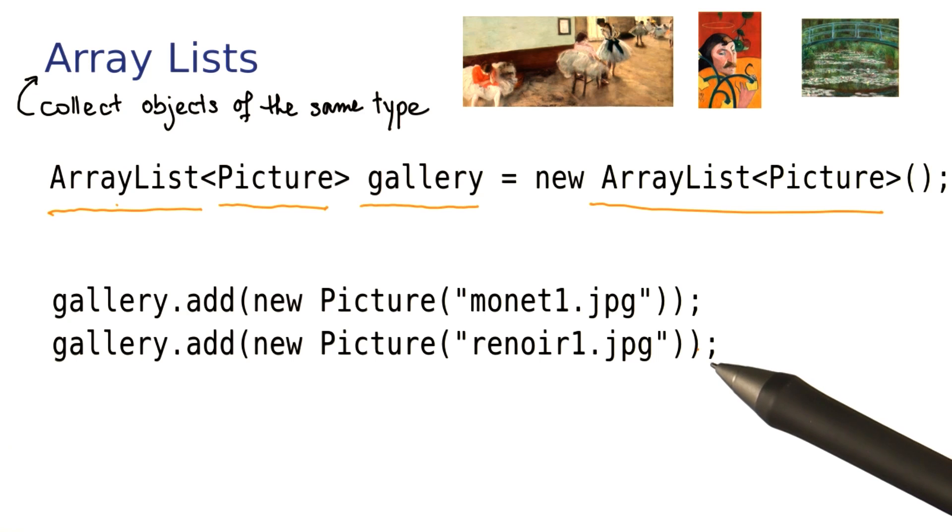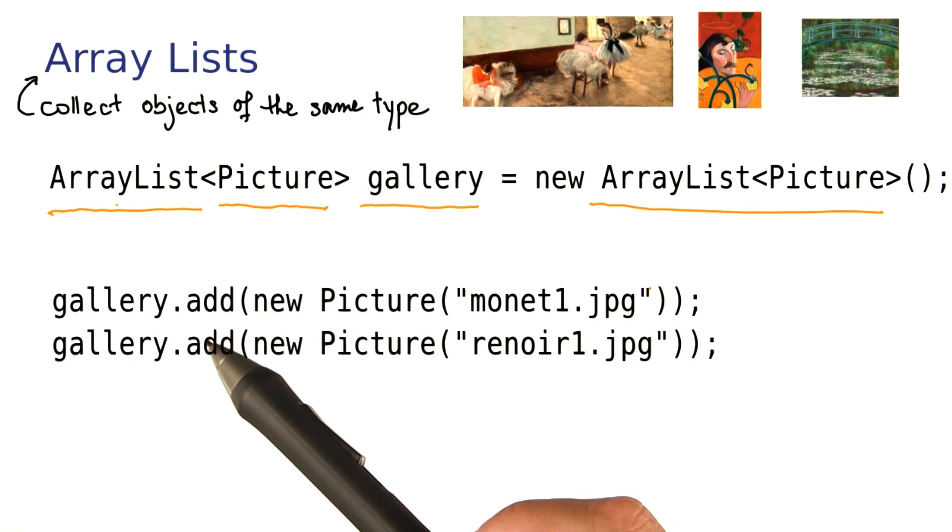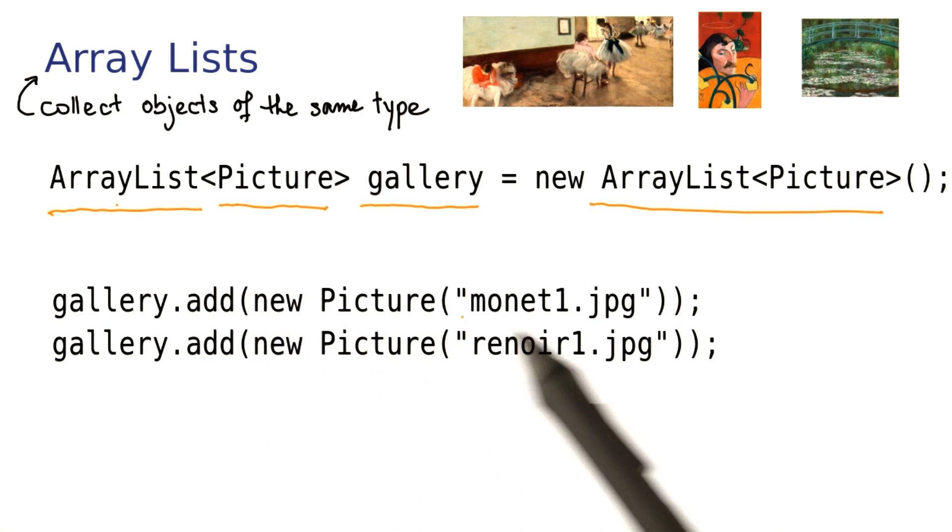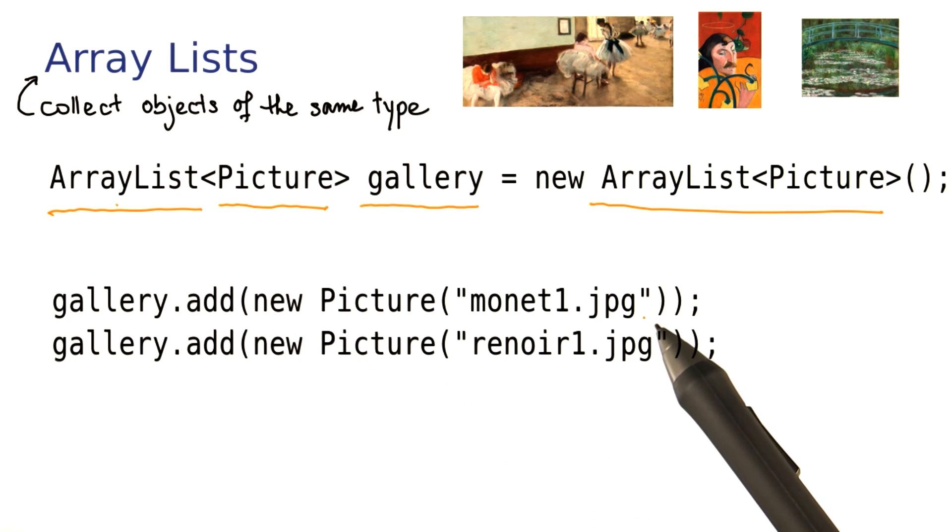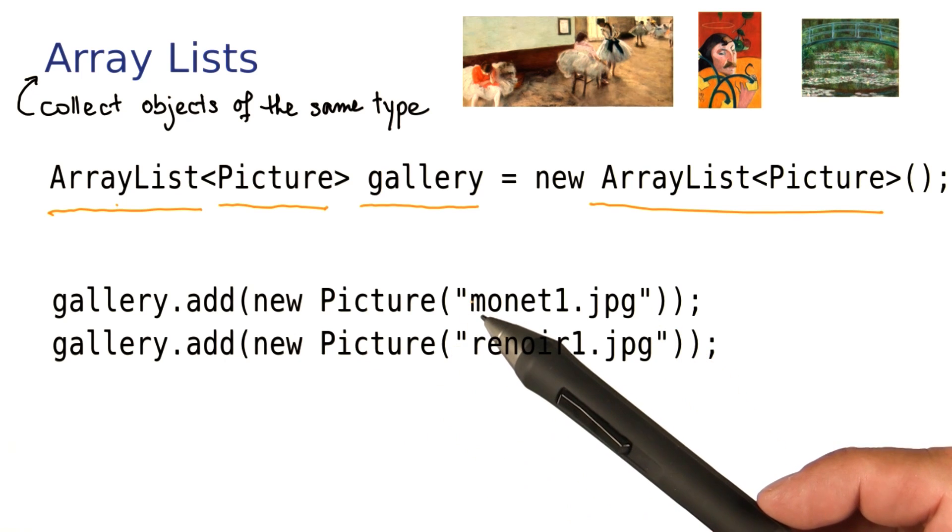Here, we add a couple of pictures to the gallery. The add method takes as its argument the object that we want to add. Once you've added objects to an ArrayList, you want to be able to do something with the contents. Let's look at that next.